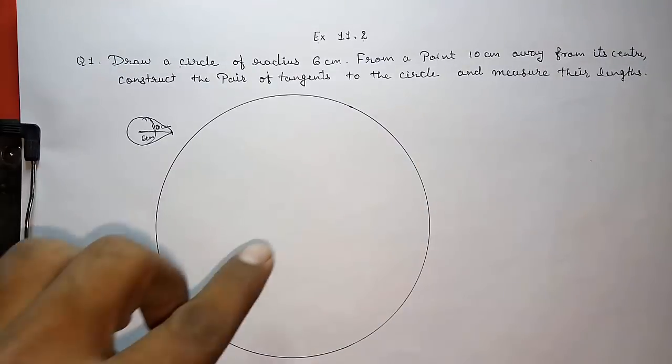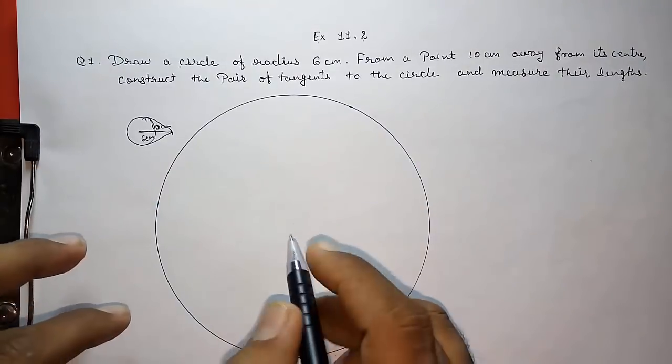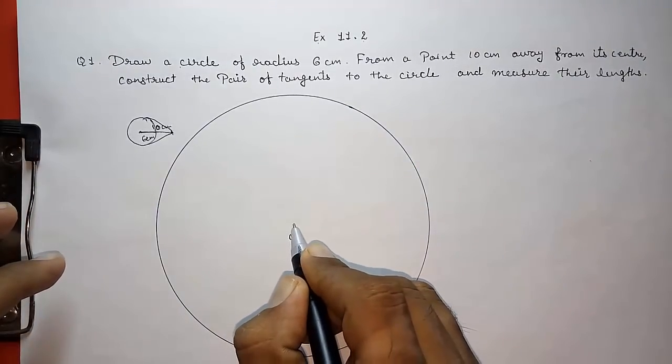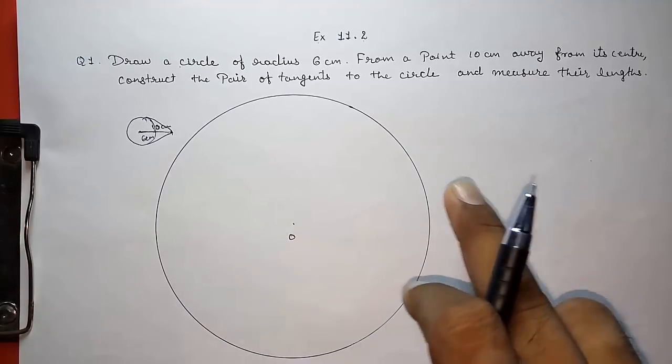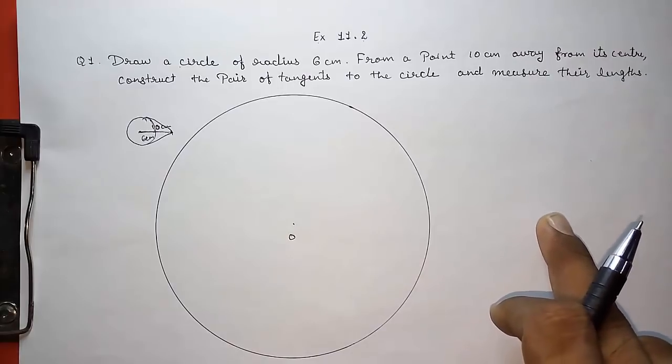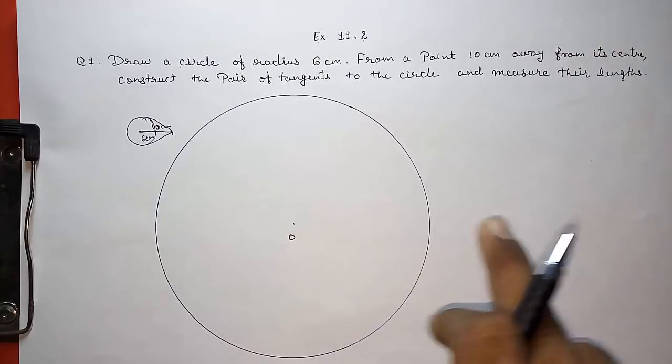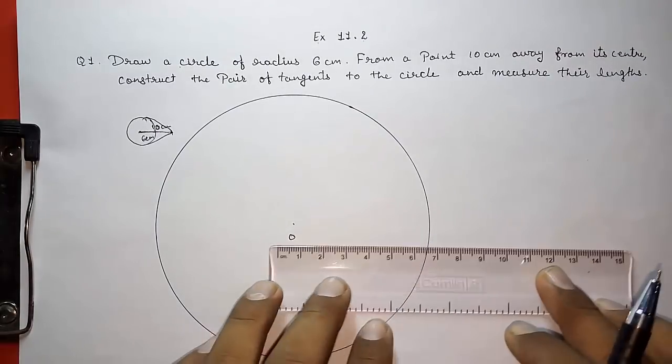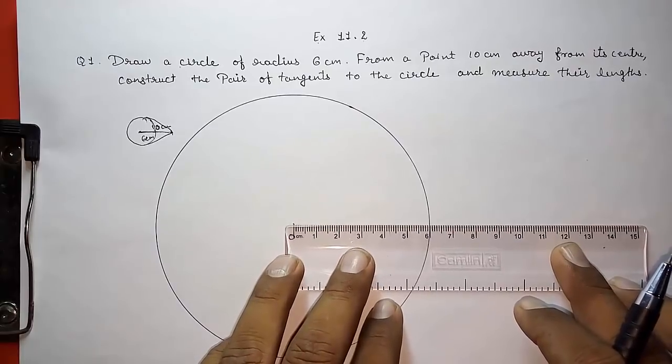Look here. I have drawn a circle with center point O with radius 6 centimeters. Now, from a point 10 centimeters away from the center. So first we have to find a point that is 10 centimeters away from center. We are going to use scale.